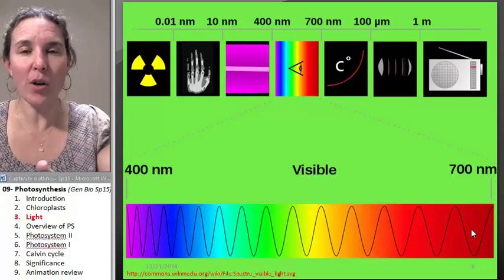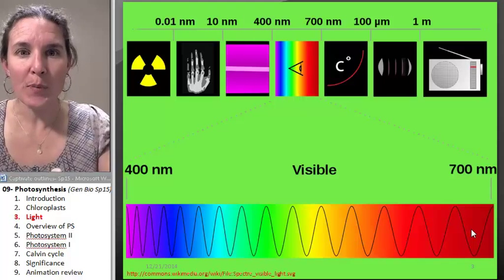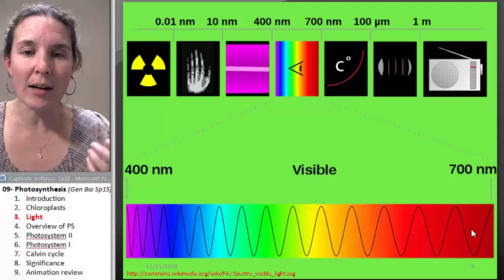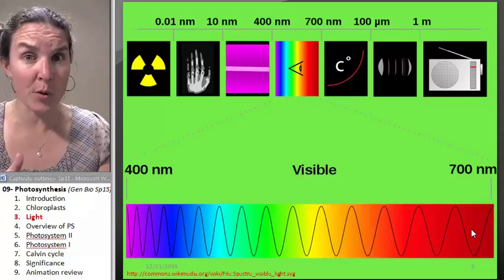the more glucose they can produce. So they want to be really good at absorbing energy. But tell me, what color of wavelength are they not absorbing?